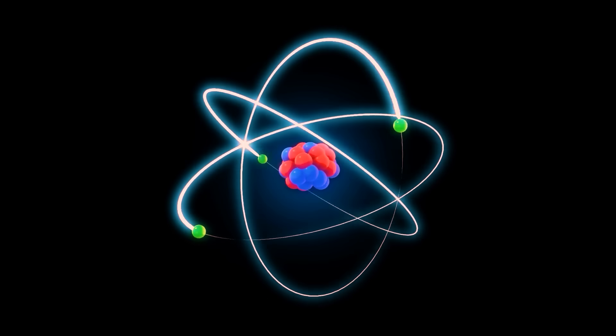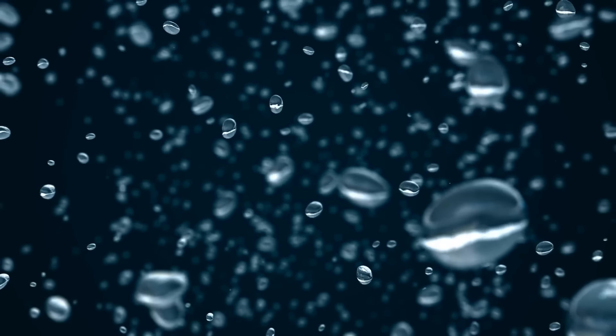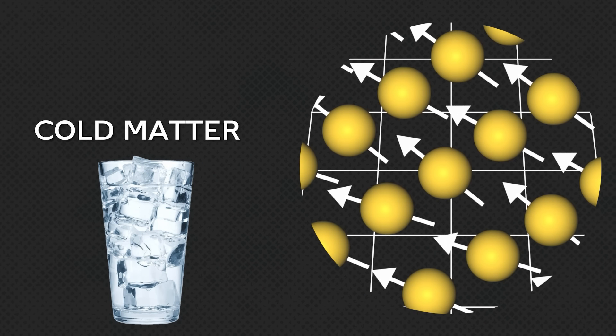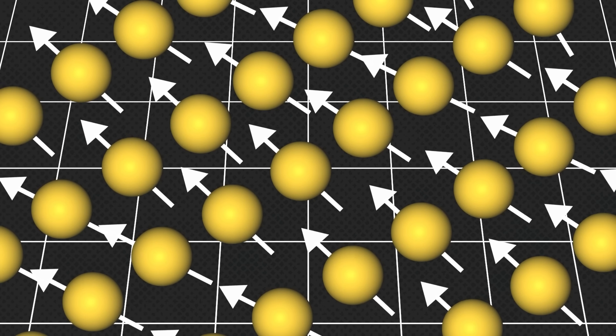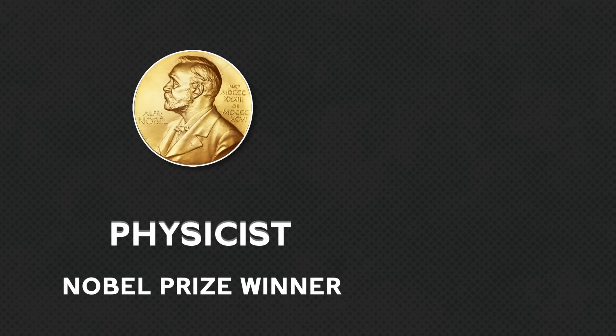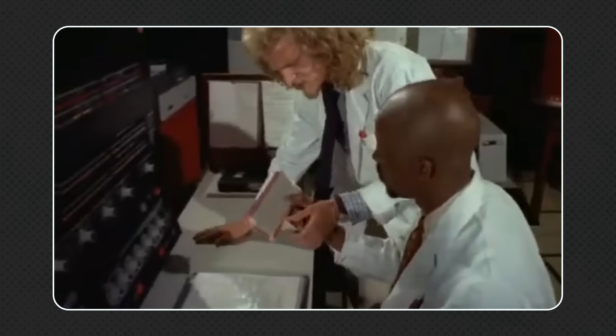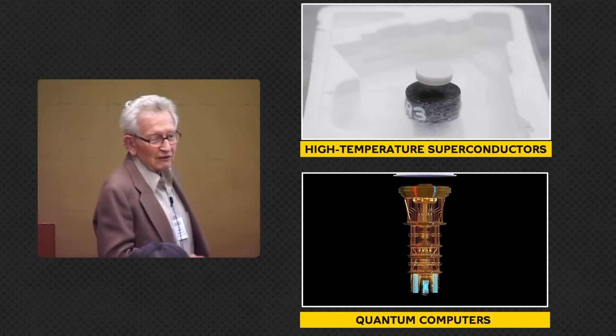Last but not the least — recently discover हुआ quantum spin liquid। नाम सुनकर लगता होगा कि यह कोई liquid state का type है, लेकिन इस state और liquid का दूर-दूर तक कोई connection नहीं है। बल्कि यह state हमें magnetism और magnets को कैसे freeze करते हैं, इसके बारे में जानकारी देता है। जब regular matter को ठंडा किया जाता है, तब electrons एक particular structure में align हो जाते हैं। लेकिन quantum spin liquid में ऐसा कुछ नहीं होता — temperature कितना भी कम हो, matter में मौजूद electrons freely move करते रहते हैं। इस state को 1970s में Nobel Prize winner physicist Philip Warren Anderson ने दुनिया के सामने पेश किया था। ठोस सबूत न होने की वजह से किसी ने ध्यान नहीं दिया, लेकिन recently 2017 में finally इसके existence को proof किया गया। Future में इसकी properties को high temperature superconductors और quantum computers में use करने का plan किया जा रहा है।